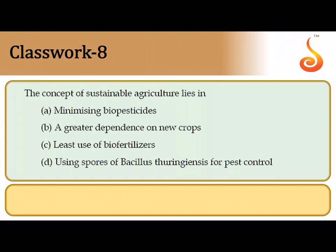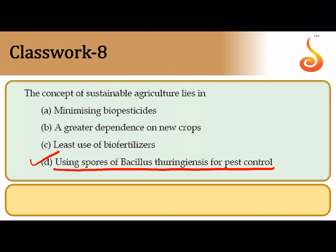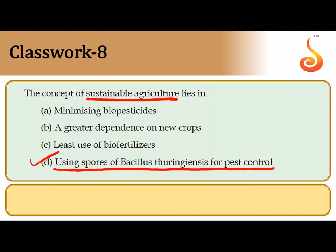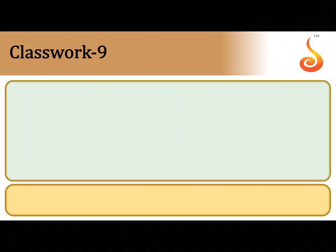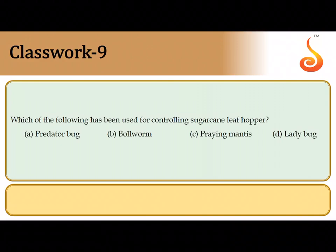The eighth question says the concept of sustainable agriculture lies in using the spores of Bacillus thuringiensis for pest control. Bacillus thuringiensis is a bacterium, and you use its spores to control caterpillar pests, making it a biocontrol agent. This is a form of sustainable agriculture because it is narrow-range and species-specific — it does not kill beneficial insects. So the correct answer is the last option.